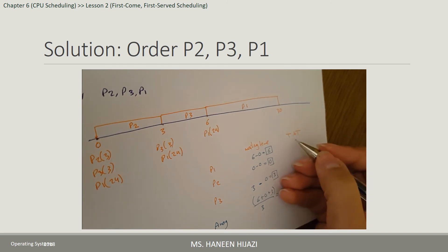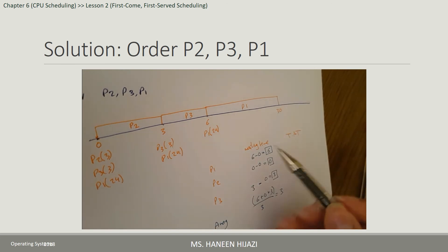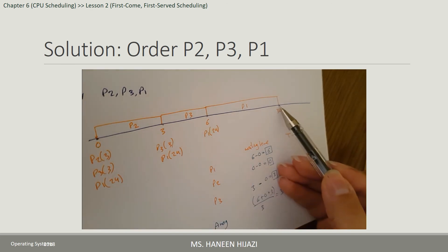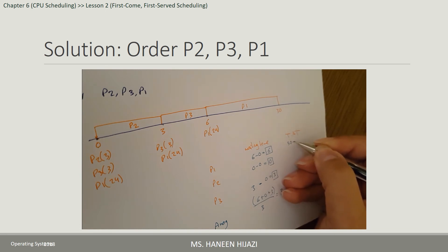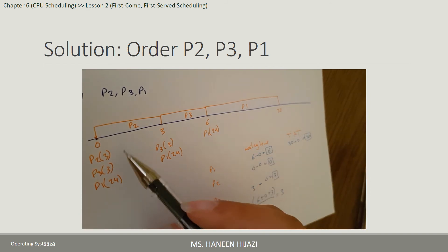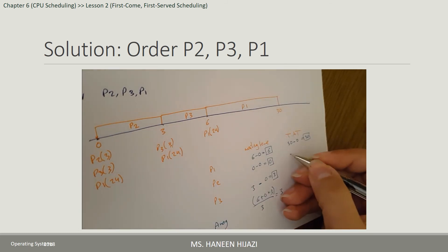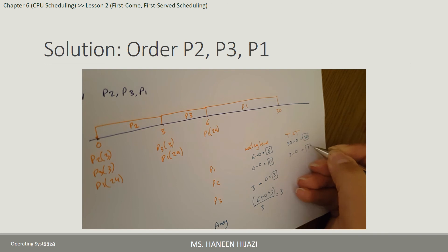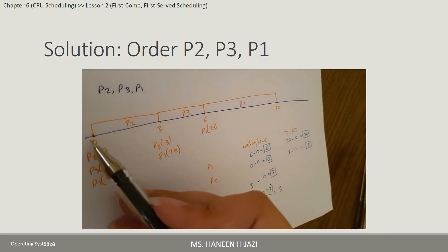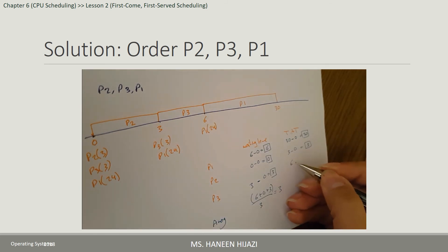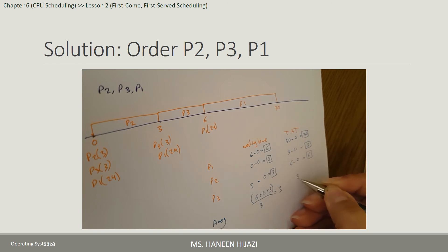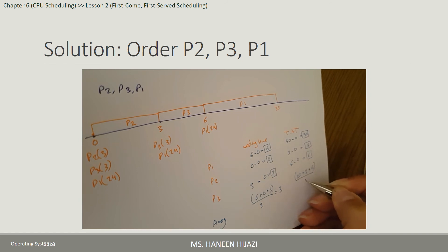الـ turn around time لكل بروسس في الـ order الجديد: P1 فاتت at time 0 وخلصت تنفيذها at time 30، معناته الـ turn around time تابعها 30 - 0 = 30. P2 فاتت at time 0 وخلصت at time 3، يعني 3 - 0 = 3. P3 فاتت at time 0 وخلصت at time 6، يعني 6 - 0 = 6. الـ Average Turn Around Time = (30 + 3 + 6) / 3 = 13.